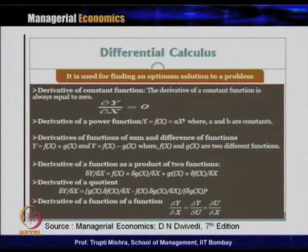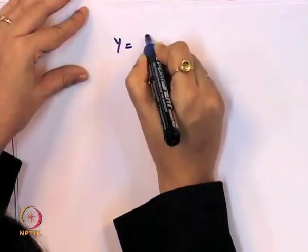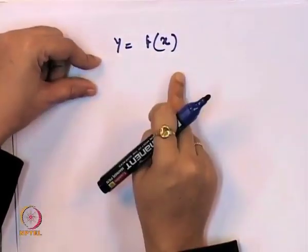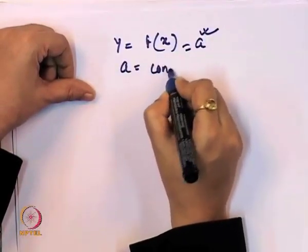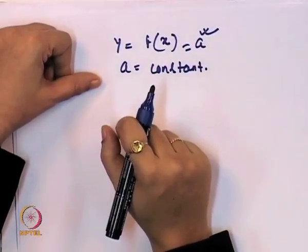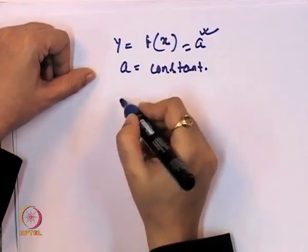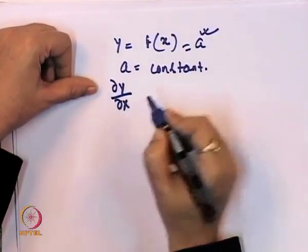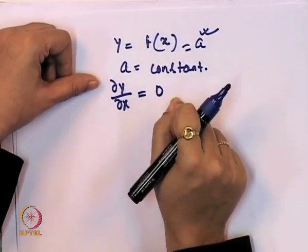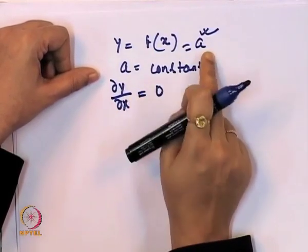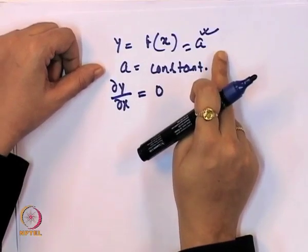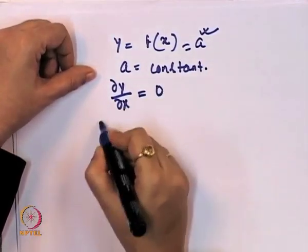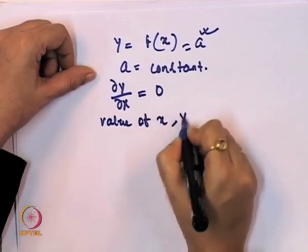We start with the constant function. The functional form is y = f(x) = a, where a is a constant. If we take the first order derivative of this functional form with respect to x, it comes to 0. Why? Because the function is in the form of a constant, and the derivative of a constant with respect to x is always 0.